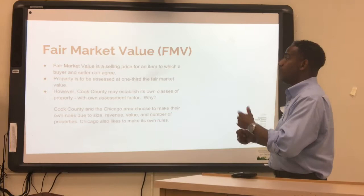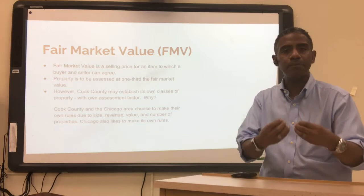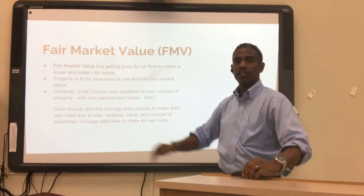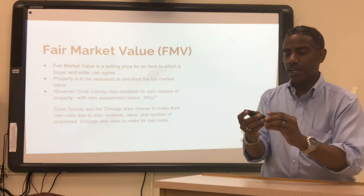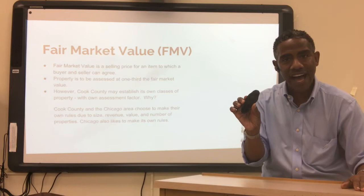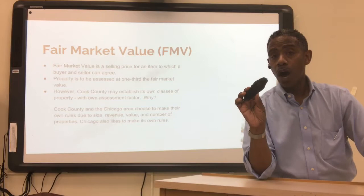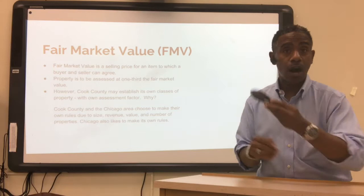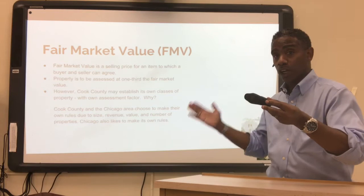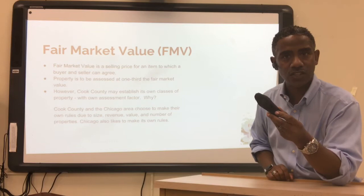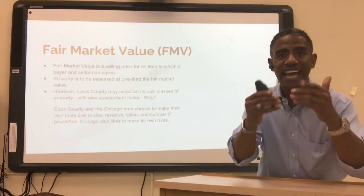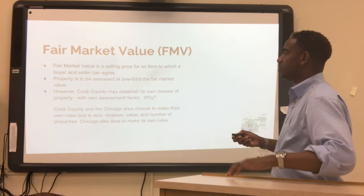Let's talk about fair market value, or FMV. Fair market value is a selling price — a price to which a buyer and seller can agree. For example, I have a clicker here. If a store says it's $29.95 and I agree to pay $29.95, the fair market value is $29.95. But if the clicker was priced at $1,000 and nobody agreed to pay that because cheaper alternatives exist, then the FMV would not be $1,000. Both entities have to agree upon the selling price.